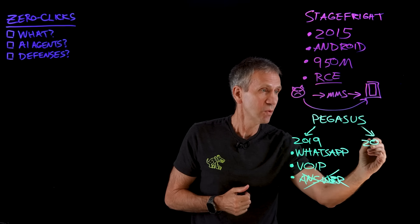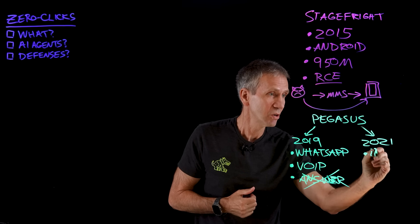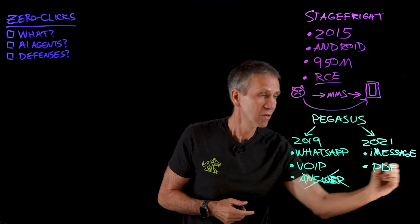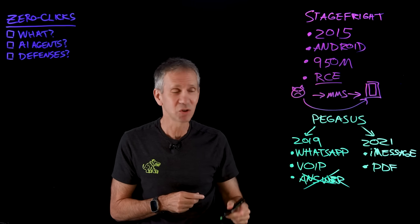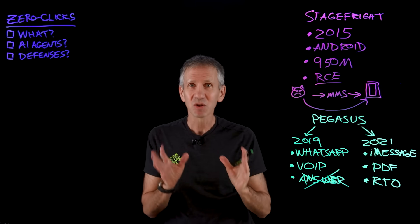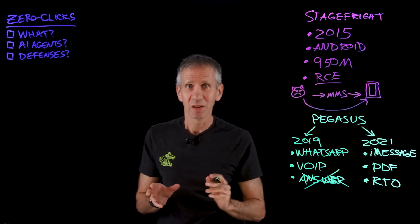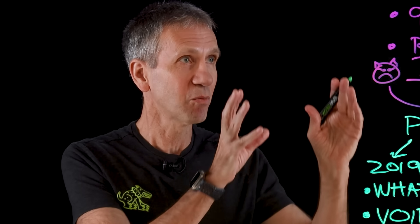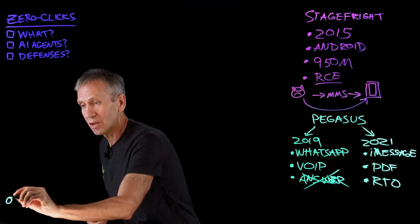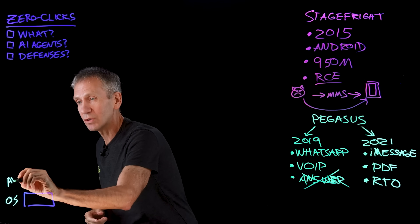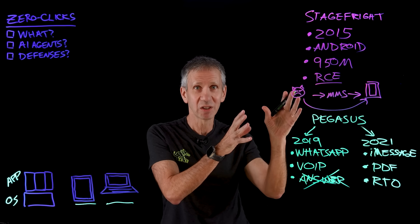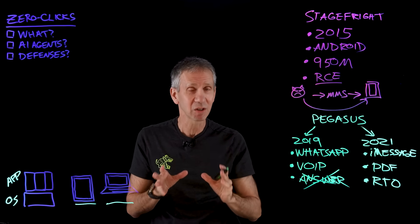Another version, in 2021, specifically affected iMessages on Apple devices. In this case, a malformed PDF sent via iMessage resulted in full remote takeover of the device — control of the keyboard and everything else. The takeaway: zero-click attacks can affect operating systems, apps, mobile devices, laptops, desktops, and other devices.